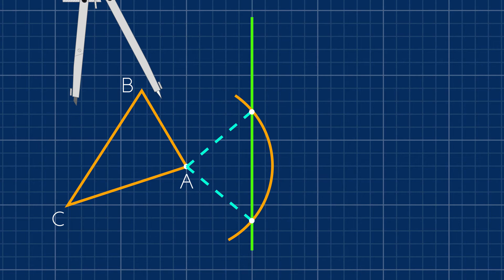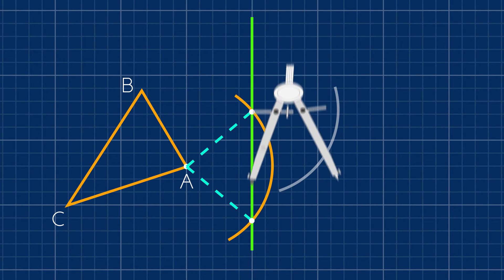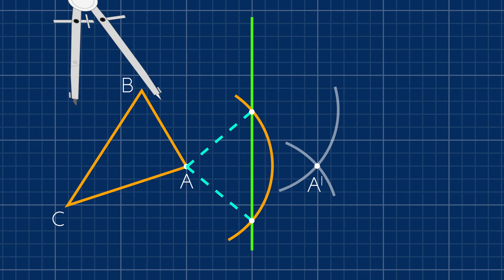Then keeping the compass at the same setting, we'll draw an arc from this intersection and from this one, that gets us A prime. That's right. Now we know all these distances are the same. A and A prime are equidistant from our line of reflection.